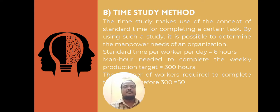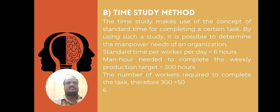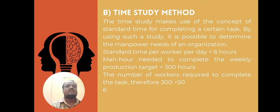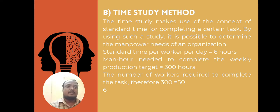Second, time study method — the time study method uses the concept of standard time for completing a certain task. For example, if standard time per worker per day is 6 hours and the man-hours needed to complete the weekly production target is 300 hours, then the number of workers required equals 300 divided by 6, which is 50 workers.